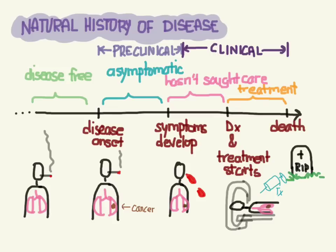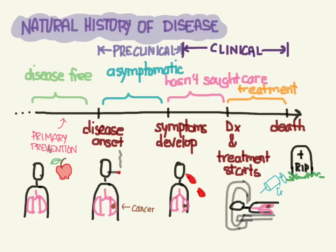Now our goal here is that we want to try to prevent disease, and we could prevent it in three different spots. Primary prevention aims to prevent disease from happening in the first place. So in this case, we tell this guy to stop smoking, eat some more fruits and vegetables, and go out and exercise.